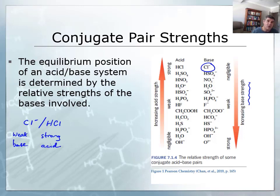And this is one of the important things about our conjugate pairs. The pair strengths are the reverse. A strong acid has a weak conjugate base, and a strong base has a weak conjugate acid.